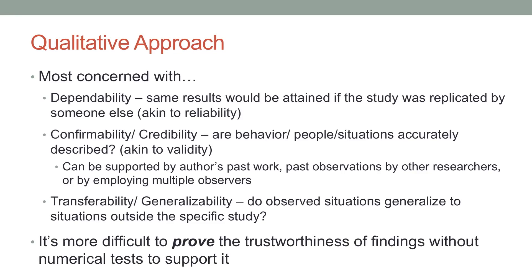With all of these, it's more difficult to prove the trustworthiness of findings — their dependability, credibility, and generalizability — without hard numbers to back it up. You can't do things like significance testing or test for reliability or validity, so a lot of it comes off at face value. Does it seem dependable, credible, and generalizable? And oftentimes that requires people to really get into the details and figure out whether the information is reliable and can be applied outside of the individual research study.